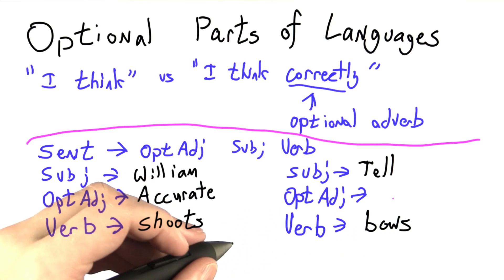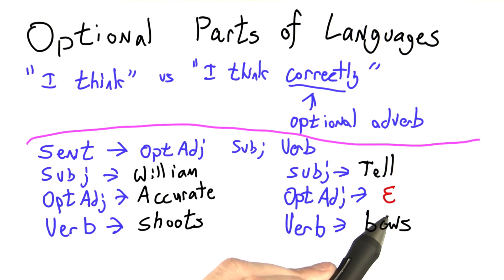We can either leave this blank, or if you like, we could write that same epsilon we used to have there when we were talking about finite state machines, that means the empty string, or no input.